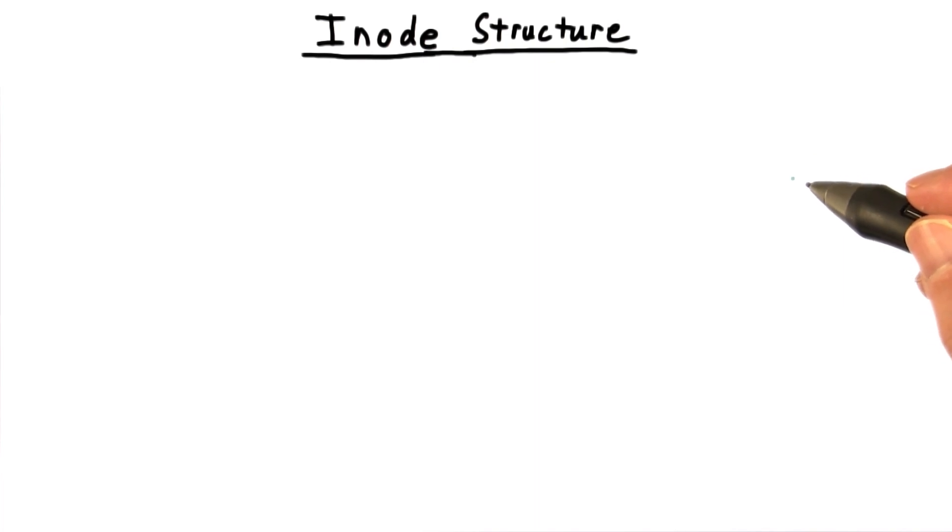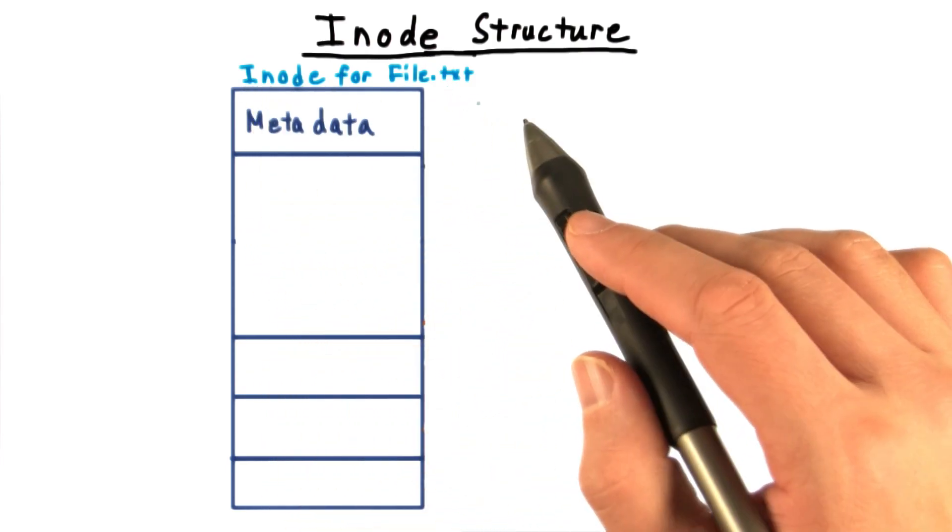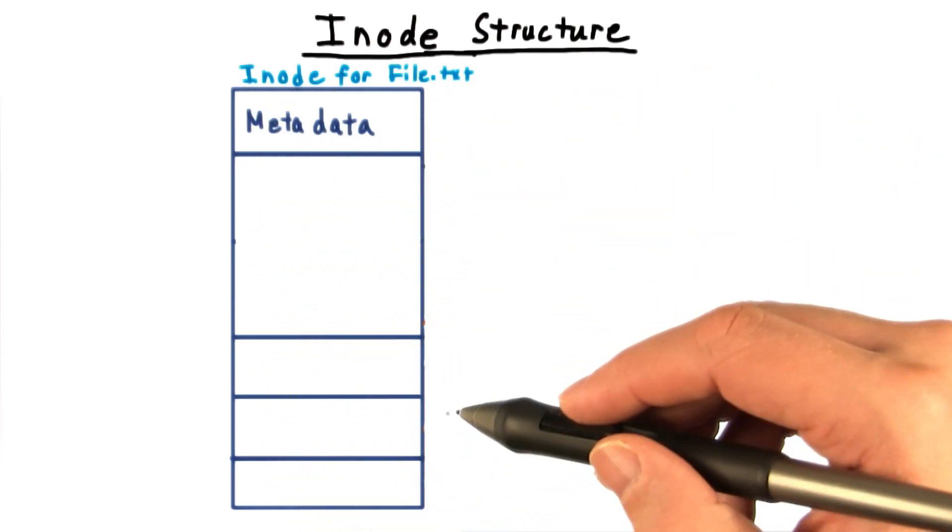Another popular file system format is the extended format commonly used in Linux. Each file on the disk has a data structure called an inode associated with it. The inode is fixed length.